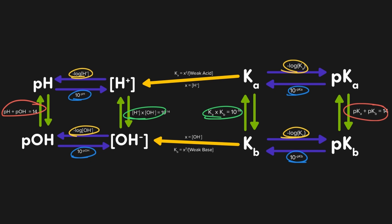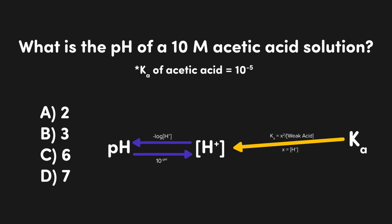Now that we've completed our map, let's look at two more examples to see how we bridge between the two halves. In this question, we're asked to find the pH of a 10 molar acetic acid solution, which has a Ka of 10 to the negative 5. Since acetic acid is a weak acid, we will be dealing with the Ka side of the map and we'll need to convert into an H+ concentration.